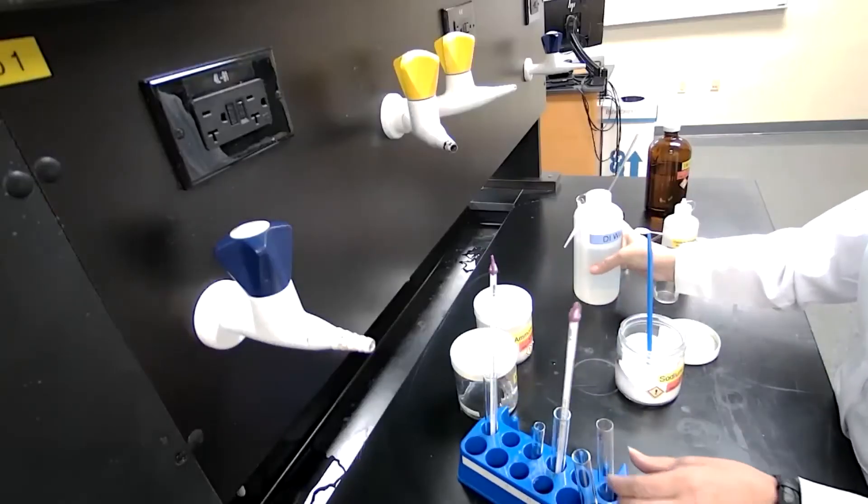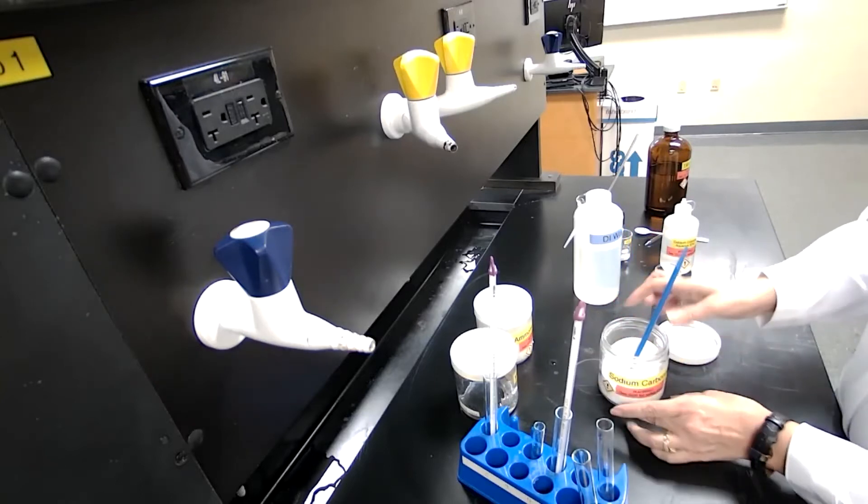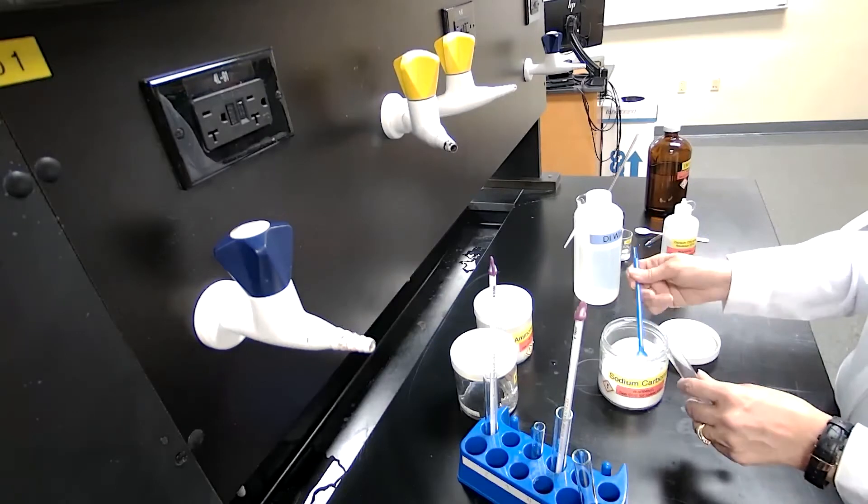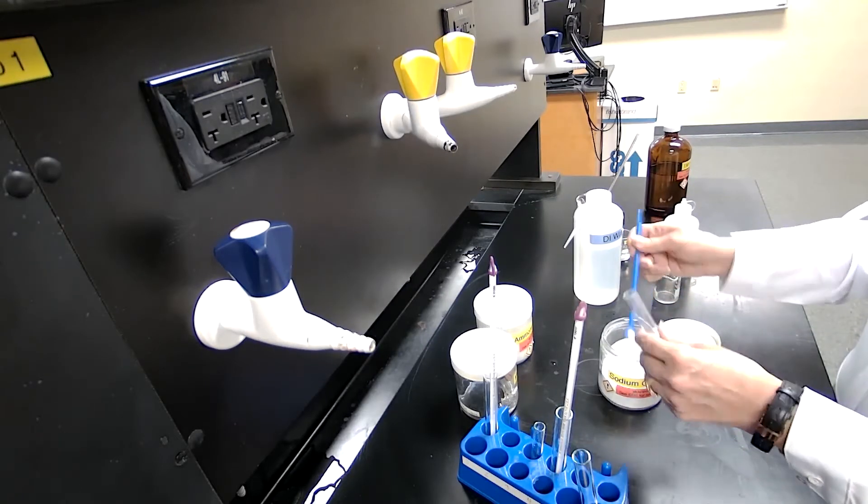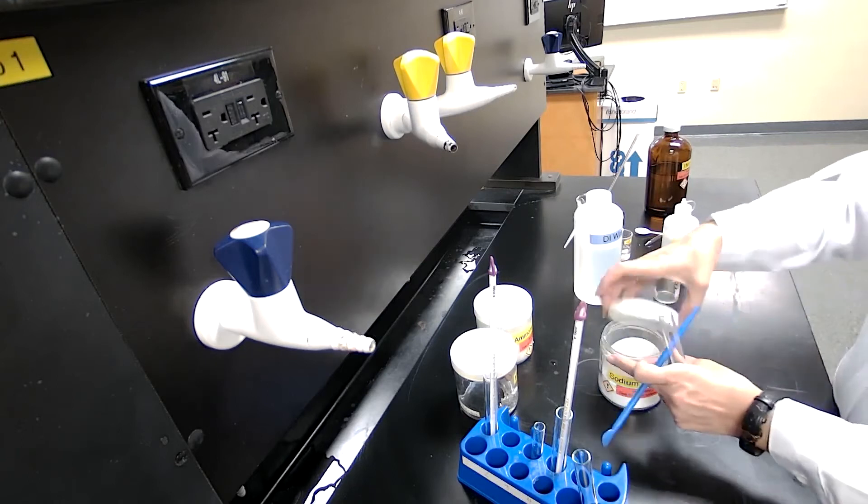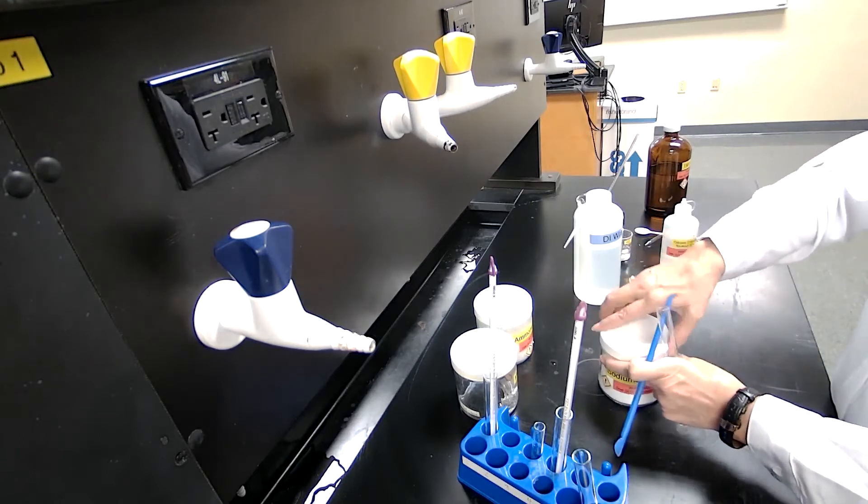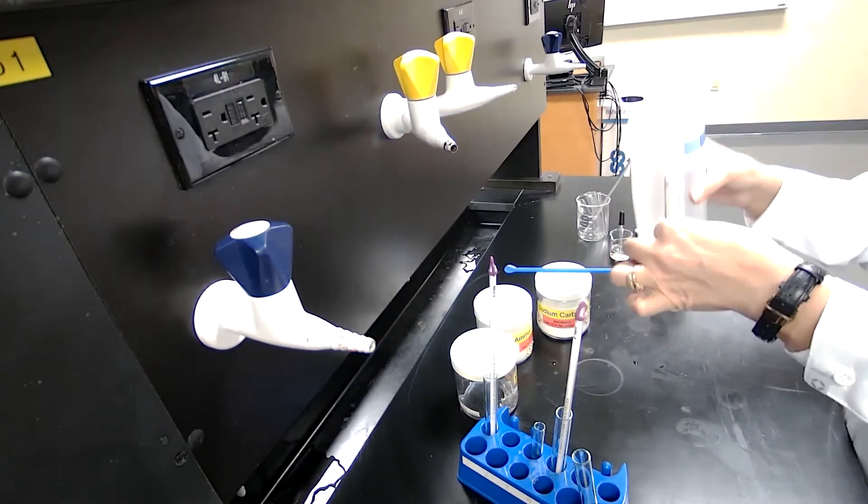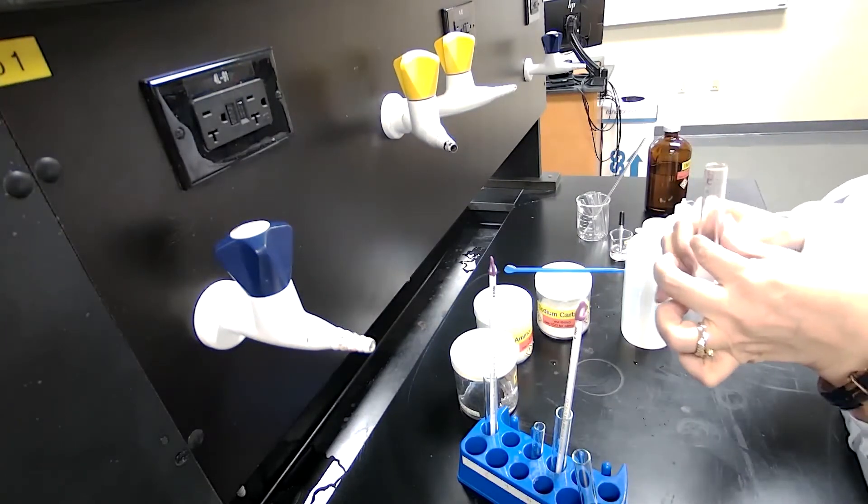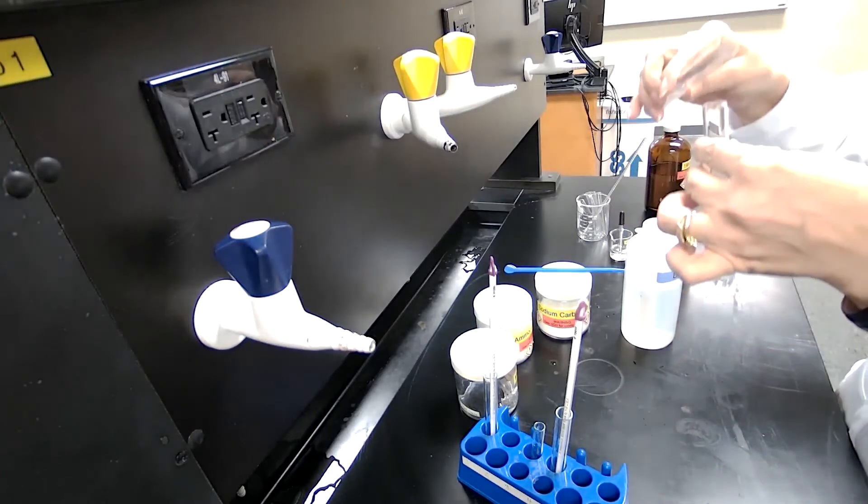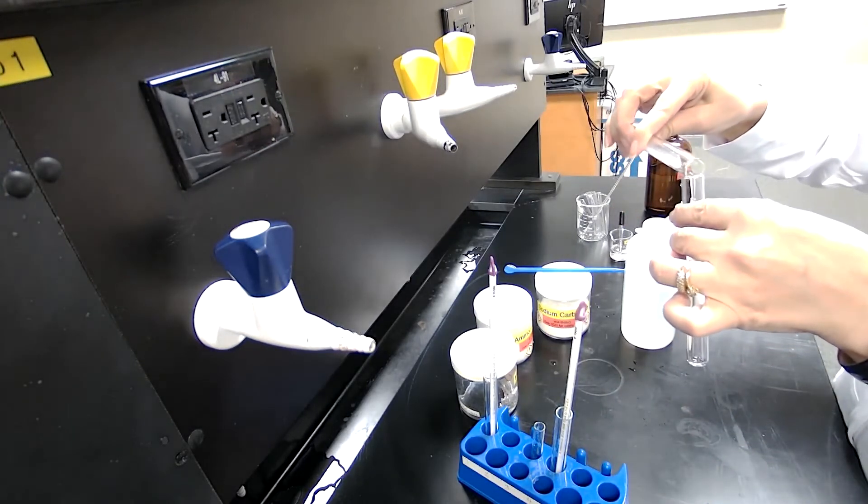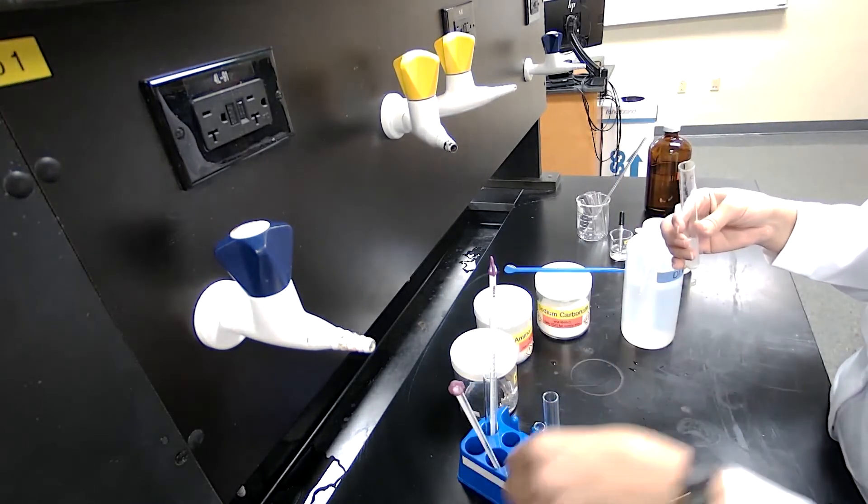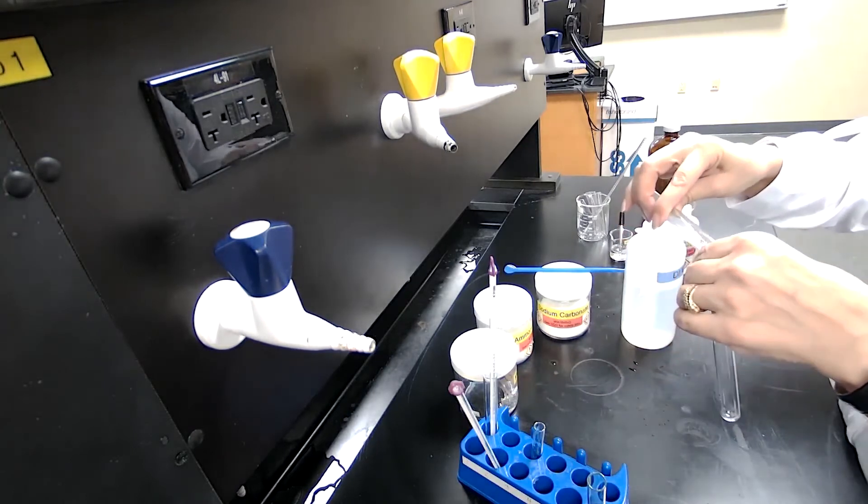Part three of experiment two, I'm adding calcium carbonate to a test tube. And I will add about six milliliters of water, about half of this test tube. I will add water to dissolve and divide this into two test tubes, about three milliliters to one test tube and about three milliliters to another test tube.